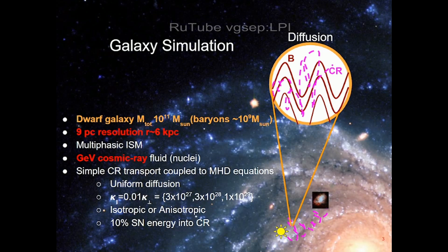The idea is to propagate cosmic rays following two versions of diffusive transport: one in which cosmic rays diffuse in an isotropic way, and another in which they diffuse anisotropically, meaning they follow the magnetic field lines. The diffusion coefficient spans between 10^27 and 10^29, bracketing values predicted for the Milky Way and allowing comparison with other simulations. The injected energy is 10% of the supernova energy.